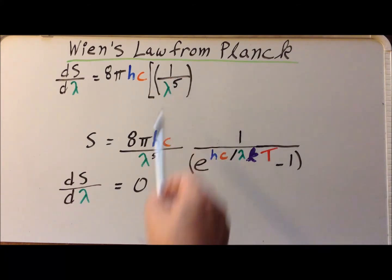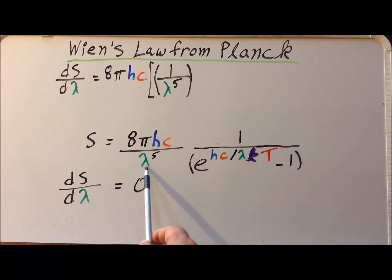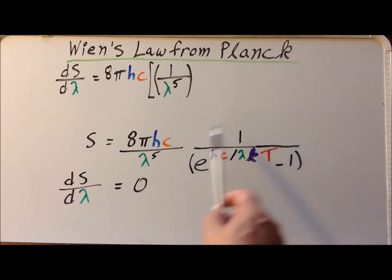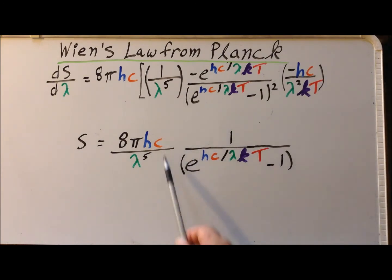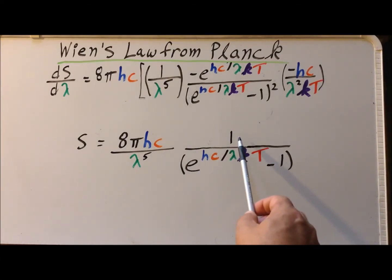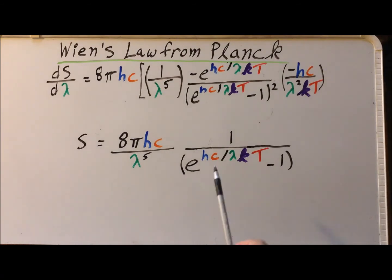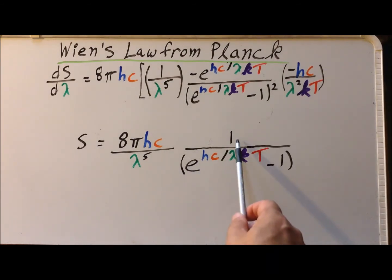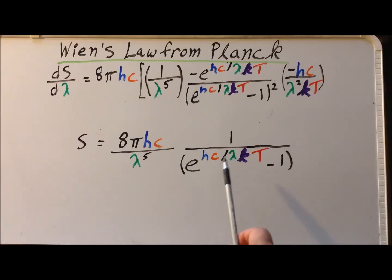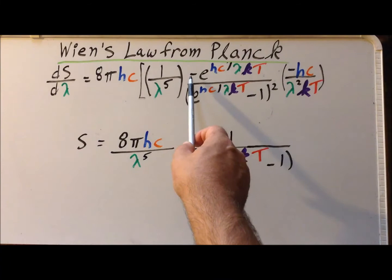The first function is one over lambda to the fifth, and we multiply that by the derivative of the second expression. For the derivative of that expression, we use the quotient rule: the bottom times the derivative of the top, minus the top times the derivative of the bottom, all over the bottom squared. So the bottom times the derivative of the top is going to be zero, minus the top times the derivative of the bottom.